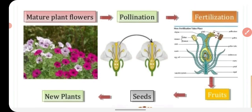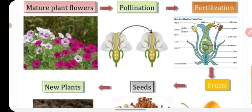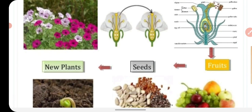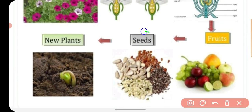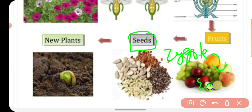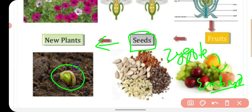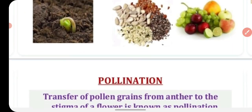After fertilization, the ovules develop into seeds and the ovary is converted into a fruit. The seed remains in a dormant or inactive condition until it receives favorable conditions such as suitable temperature, light, air, and water. When these conditions are available, germination occurs and a baby plant — a new plant — comes out.